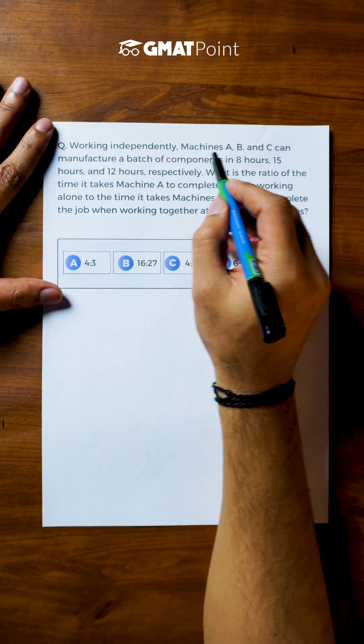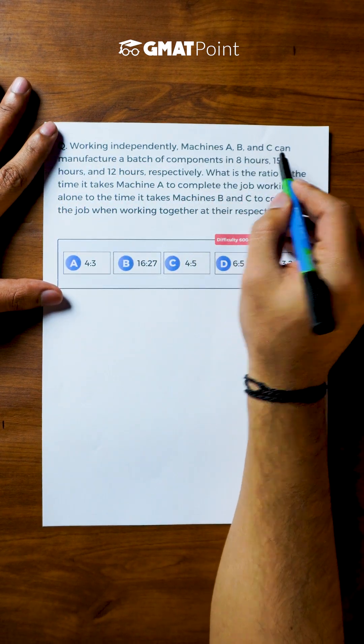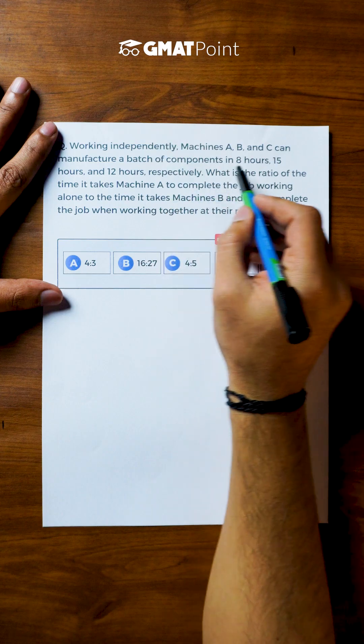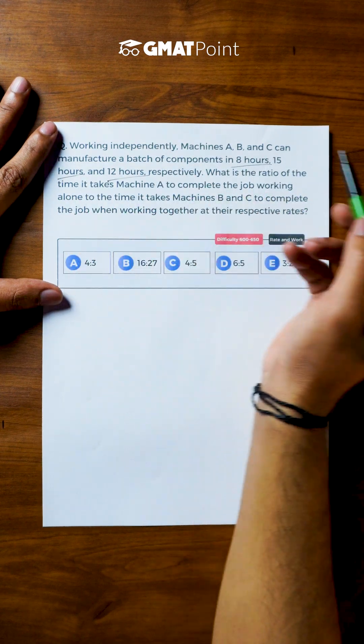Let us see how to solve this question. Working independently, machines A, B and C can manufacture a batch of components in 8 hours, 15 hours and 12 hours respectively.